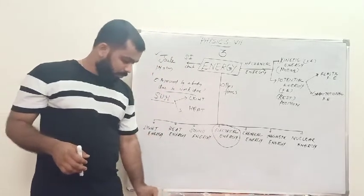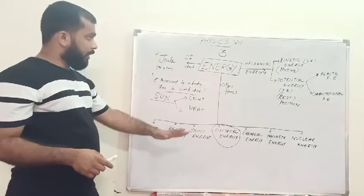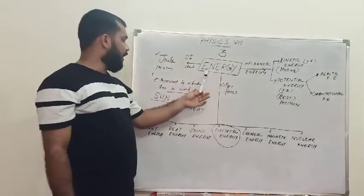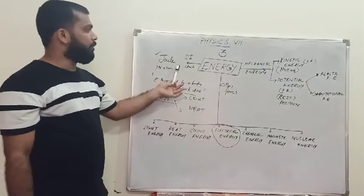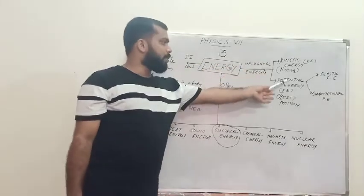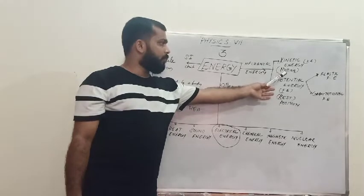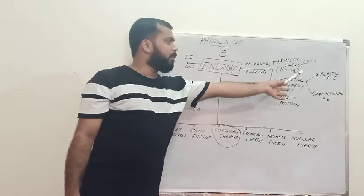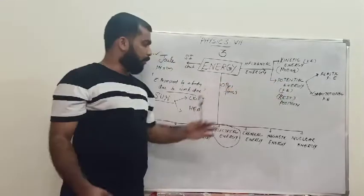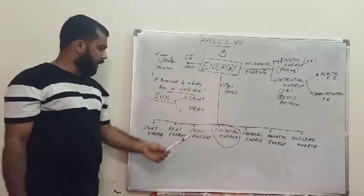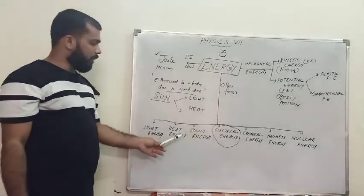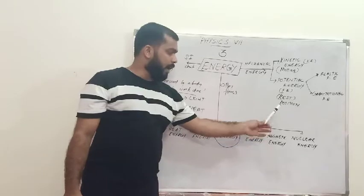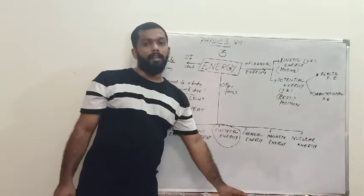To summarize what we have discussed: energy is the capacity to do work, its SI unit is the joule, mechanical energy has two types — kinetic energy and potential energy, with potential energy further divided into elastic potential energy and gravitational potential energy. Other forms include light energy, heat energy, sound energy, electrical energy, chemical energy, magnetic energy, and nuclear energy.